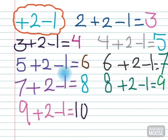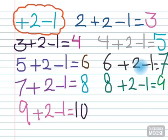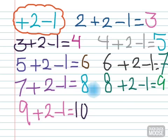7 minus 1 equals 6. 6 plus 2 is 8. 8 minus 1 equals 7. 7 plus 2 minus 1 is 8. 8 plus 2 is 10. 10 minus 1 is 9.